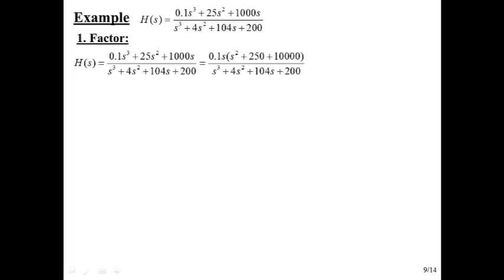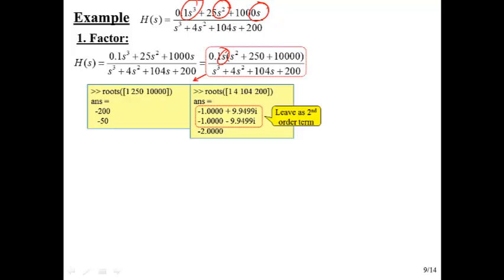Suppose this is our transfer function — maybe we've analyzed a circuit and found it, and we want to know what the frequency response looks like on a dB log plot. First we factor the polynomial. We see it has s³, s², s¹, so we can pull an s out in front. Then we use MATLAB to find the roots: the numerator has two distinct real roots, while the denominator has a quadratic with complex roots — which we leave together — plus one other real root.